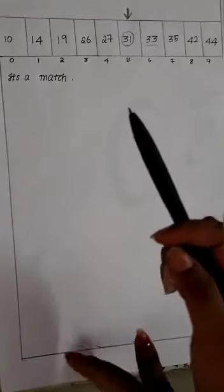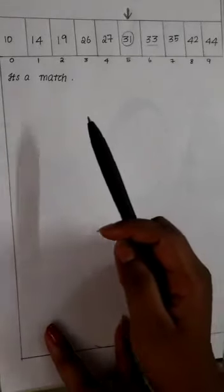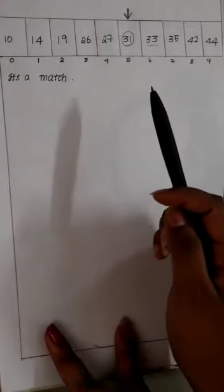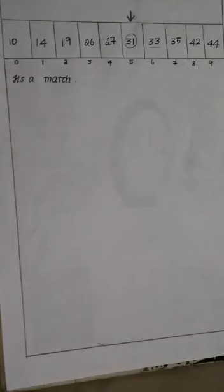Usually binary search halves the searchable items and thus reduces the count of comparisons to be made in very less number. Thank you.